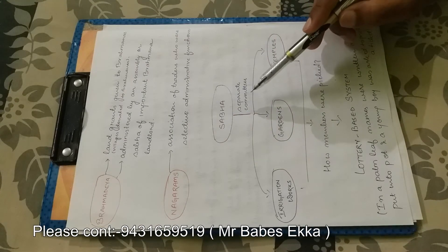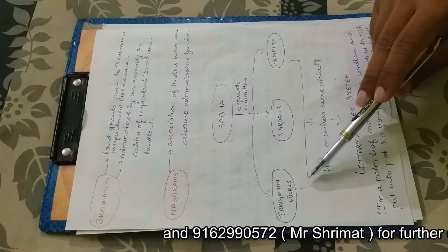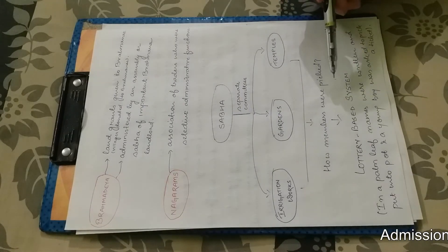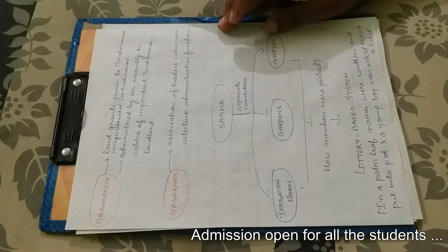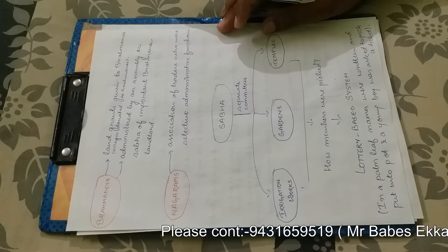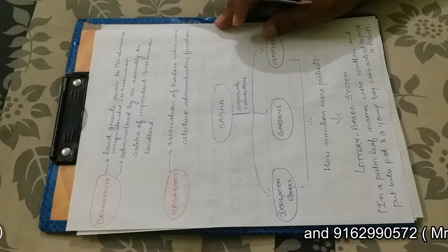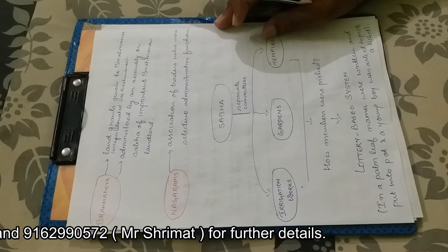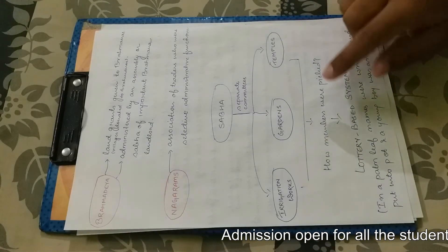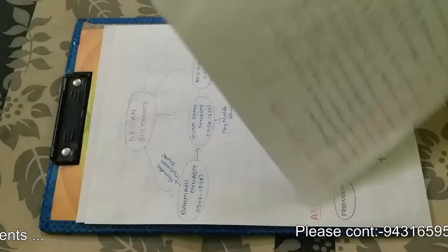Now sabha was separated into different committees. There could be committee for irrigation works, committee for gardens, committee for temples. And how were members picked? Lottery based system. The eligible candidates' names were written on palm leaves. Then all the candidates' names were put into a pot. Then a young boy was asked to pick out a ticket. On the basis of that, the members were picked for these committees. That is for irrigation works, gardens, temples etc.